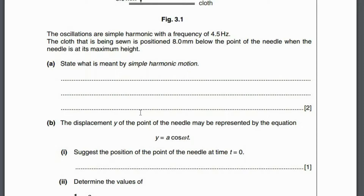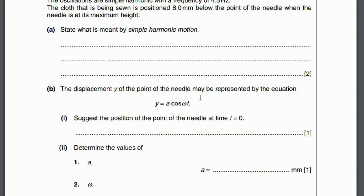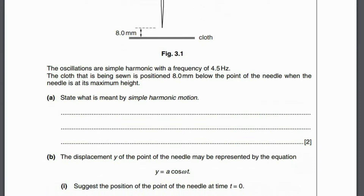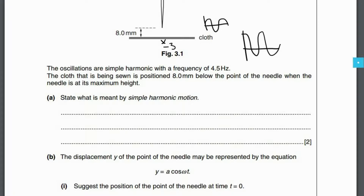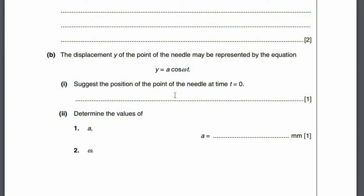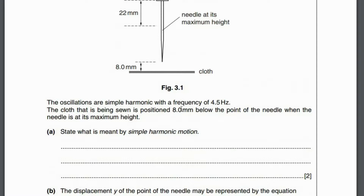State what is meant by simple harmonic motion: the acceleration is proportional to the displacement from a fixed equilibrium point, and the acceleration is always directed towards that fixed point. The displacement equation uses y = A cos(ωt) because the motion starts from the highest point — cosine graphs start at their maximum. At t = 0, the needle is at the highest point, which is 8 mm above the cloth.